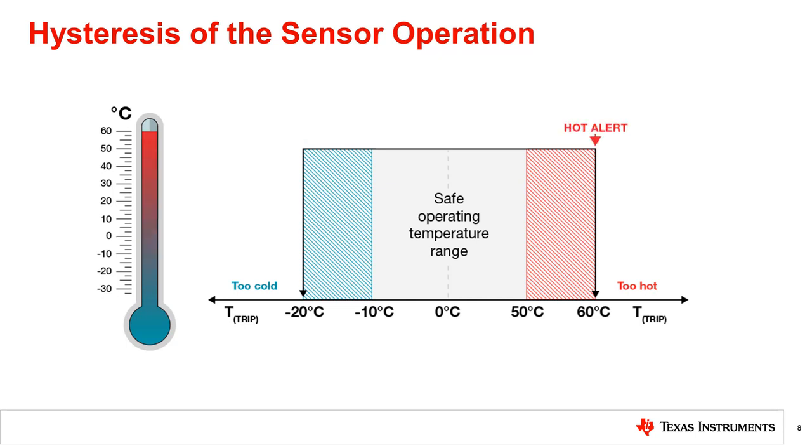Hysteresis gives your system time to settle and would ensure that your control system does not exhibit frequent power cycles. For example, in the image shown, a 10 degrees Celsius hysteresis is applied to both a warm and cold thermal limit. This would optimize your system's performance within 50 degrees Celsius to 60 degrees Celsius.